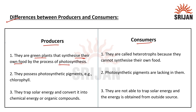Producers are autotrophic in nature. Consumers are called heterotrophs because they cannot make their own food and they are directly or indirectly dependent on the producers for their food requirement.